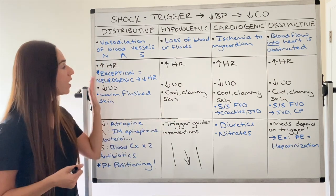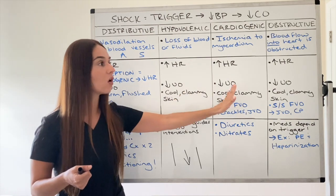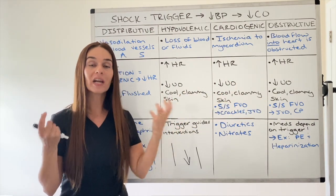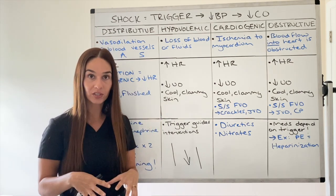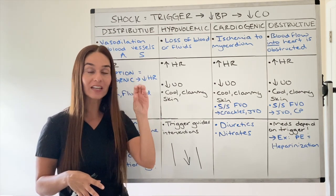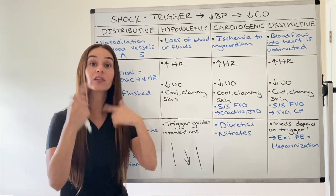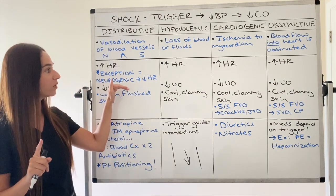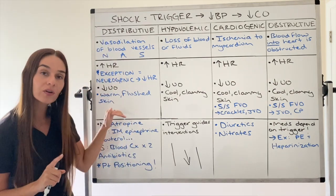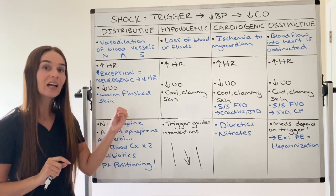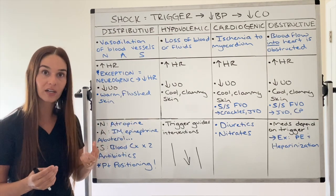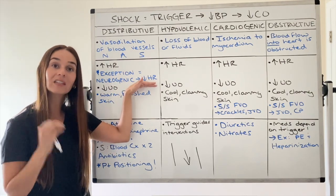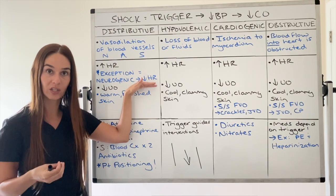The heart rate goes up in all categories of shock, which makes sense. When I have decreased blood pressure, my heart is going to pump faster and faster to try to circulate whatever oxygenated blood I have left. Except — noted in blue — with neurogenic shock this is very different: they don't experience tachycardia. They experience bradycardia — a decreased heart rate.